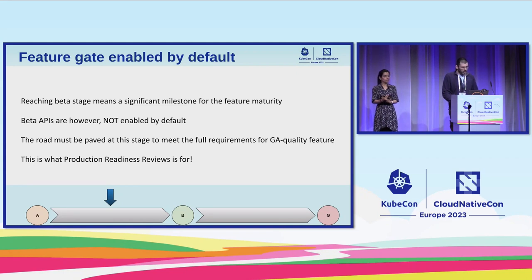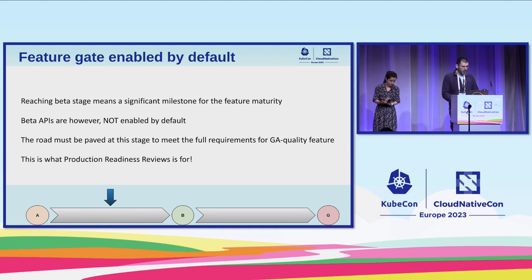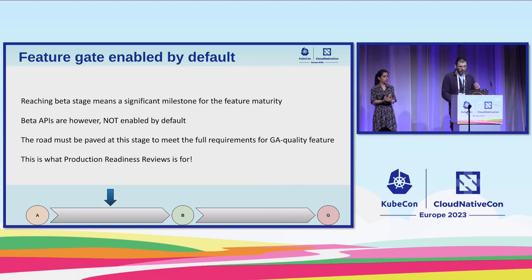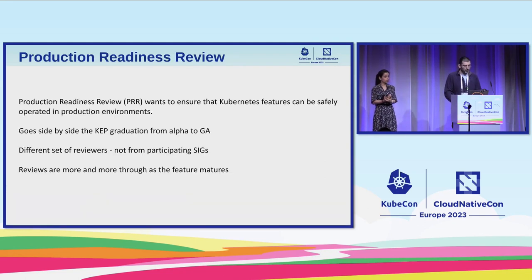When we promote to beta, the feature flag is enabled by default — a recognition of the maturity of the feature. But it is also a responsibility, because now everyone is potentially exposed to this feature, and we need to make sure that the stability and quality criteria are met. We build on those criteria to make sure we have a good GA feature. To make sure stability and quality are up to expectations, this is what the production readiness review is all about.